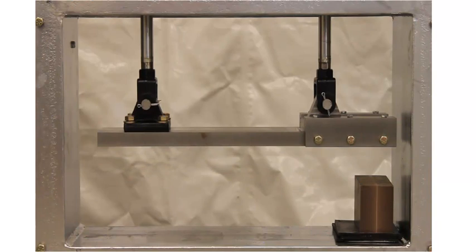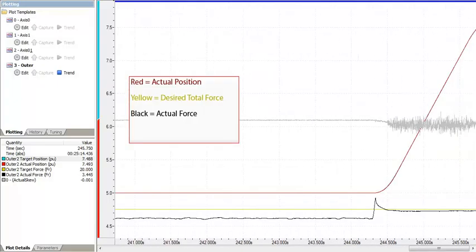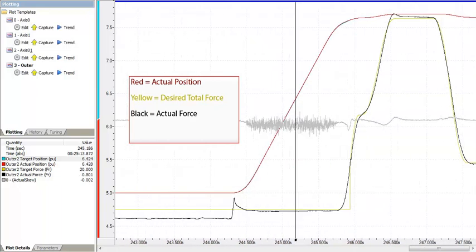Let's look at a plot of the motion. The position is red, the desired total force is yellow, and the actual force is black.